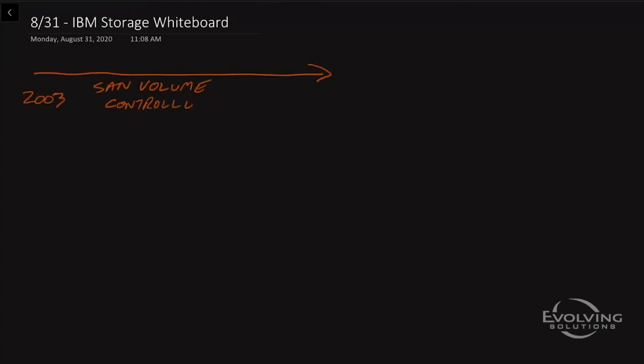What that product was, was a virtualization appliance that sat in the middle of your SAN fabric and made any storage that you connected to it agnostic. So you could connect IBM, EMC, Hitachi, other manufacturers. And many customers still use this product today to aggregate all of these different vendors under a single management point.